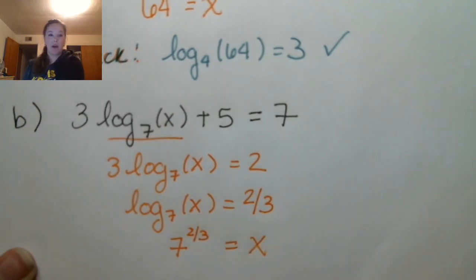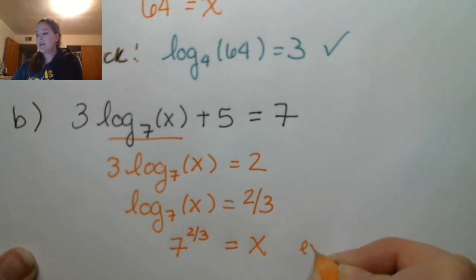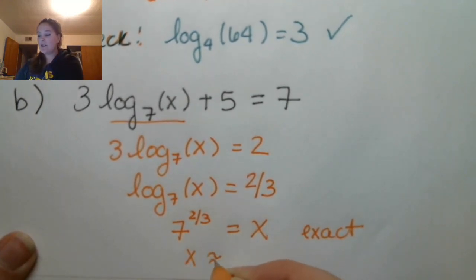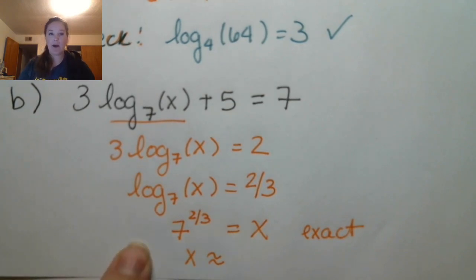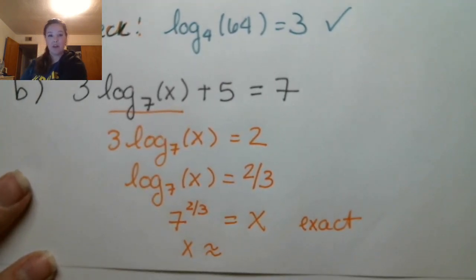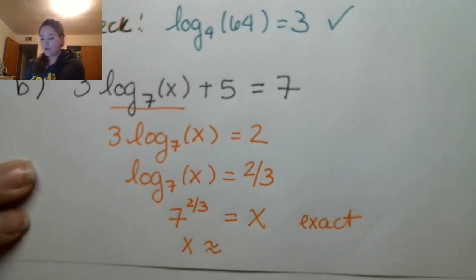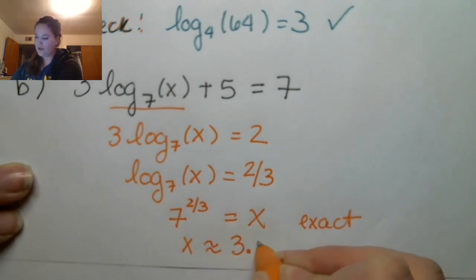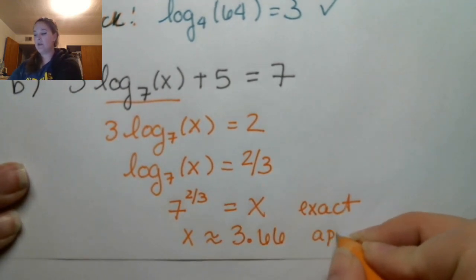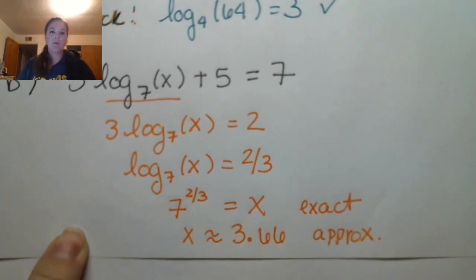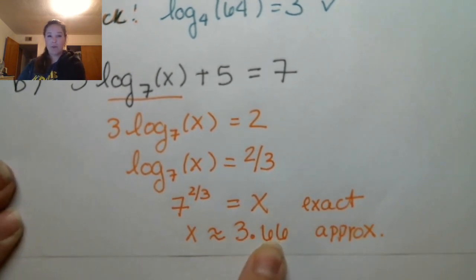And then my other side is the input value x. Now this is my exact answer, and if I want an approximate answer, I can always put this into the calculator. Now I know this isn't going to come out even, right? Because the 3 in the denominator of this exponent means I'm talking about the cube root of 7. So I have 7 to the 2 thirds power, and this is approximately 3.66. So this is my approximate answer. No matter how many decimal points you write out, this will never be an exact answer.